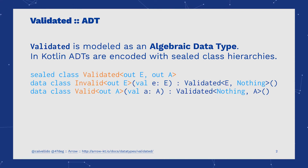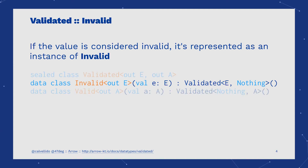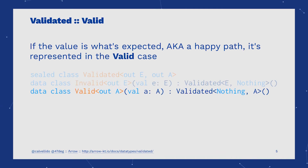Algebraic data types are modeled in Kotlin with sealed classes. Validated has two possible values: either an Invalid or a Valid. In the Invalid case, we usually encode a non-expected value. In the Valid case, we encode what we can call the happy path.